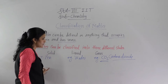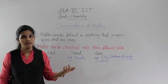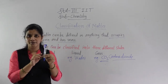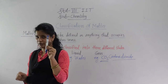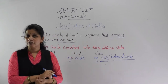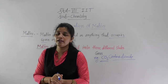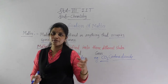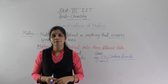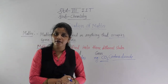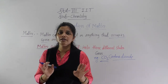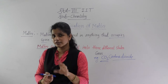Why are substances classified into three different states? Because they have different characteristics. This pen has a fixed volume and fixed shape. But water does not have a fixed shape — it takes the shape of any container. If you pour water into a glass, it takes the shape of the glass; in a beaker, it takes the shape of the beaker. So water has no fixed shape, but it has a fixed volume.